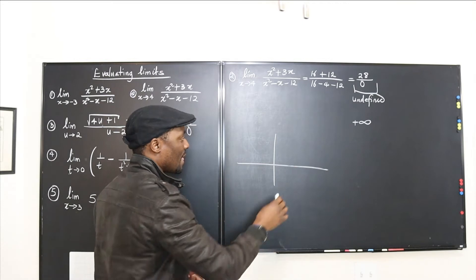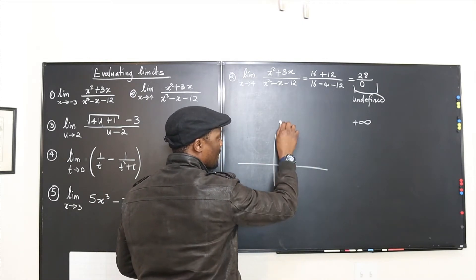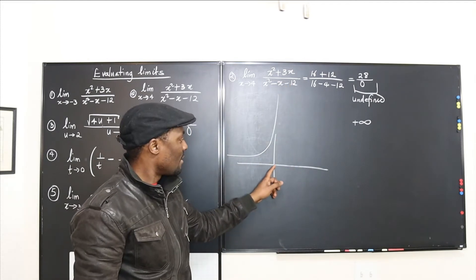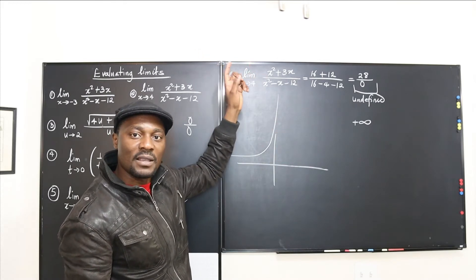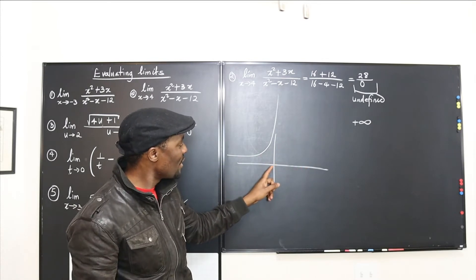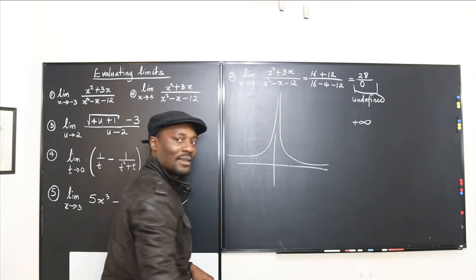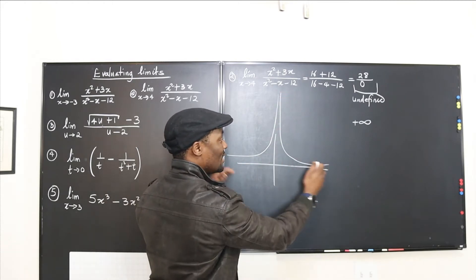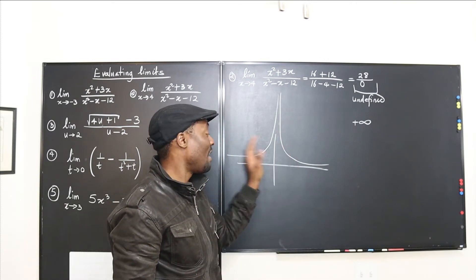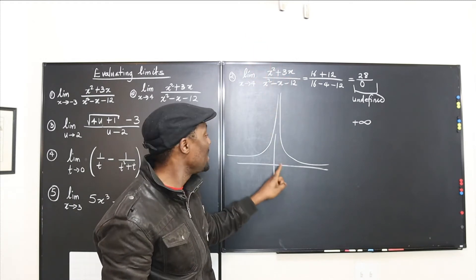Let's say you have a graph that approaches a certain point and decides to go up to infinity. If both sides — coming from the left and from the right — go in the same direction as they approach that point, then you can say the limit is positive infinity regardless of which side you're coming from.